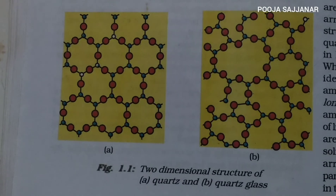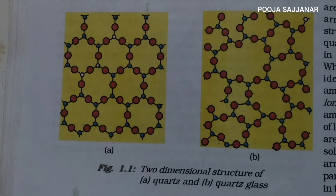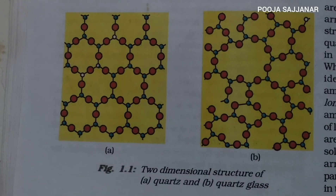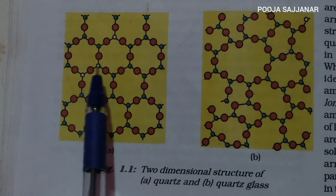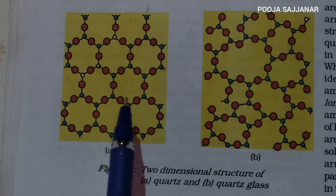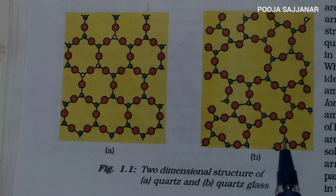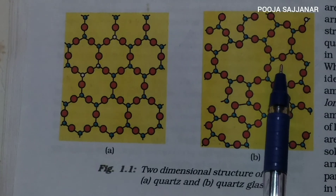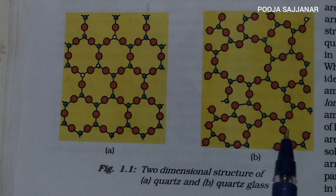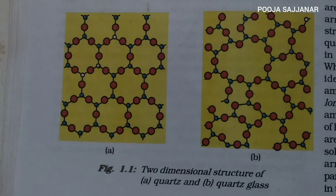We can consider a figure to understand this. Figure A indicates the structure of quartz, which is a crystalline solid, and figure B indicates the structure of quartz glass, which is an amorphous solid. In the crystalline solid structure, the arrangement of constituent particles is the same in all areas. But when we consider the amorphous solid structure, for some distance the arrangement may be the same, but different areas contain different types of arrangement. So a regular and repeating pattern is observed over a short distance only — not over the entire structure. Therefore, amorphous solids have a short range order.